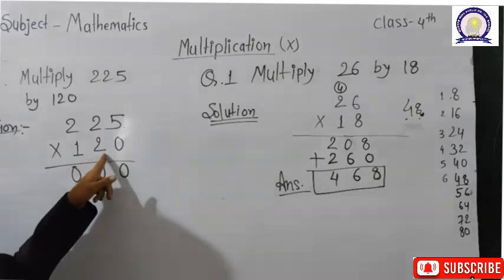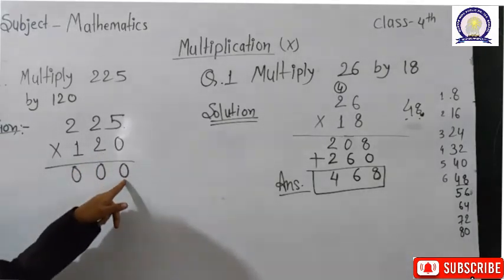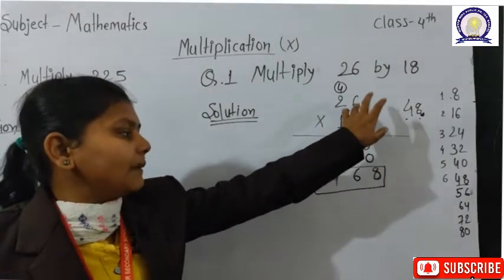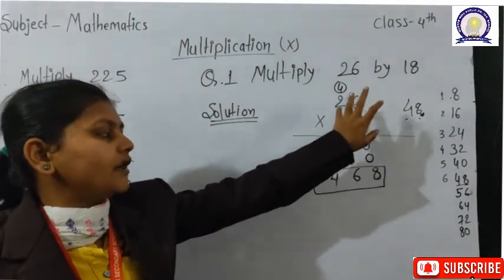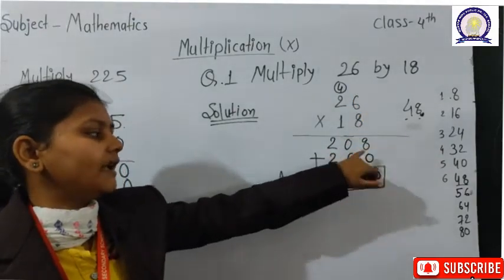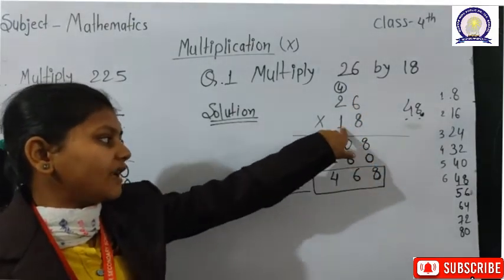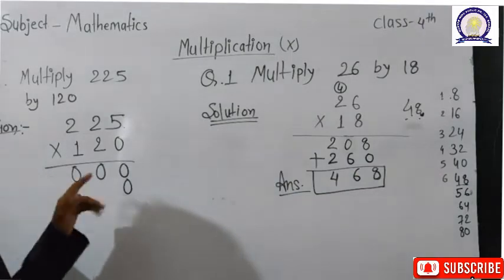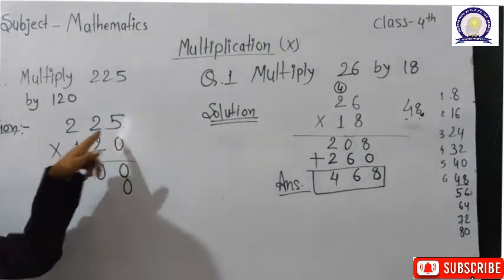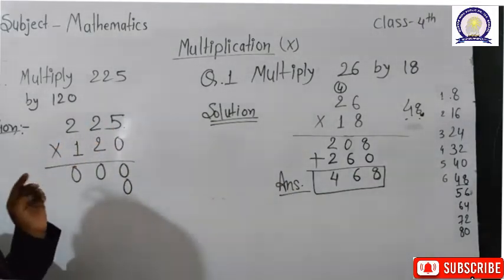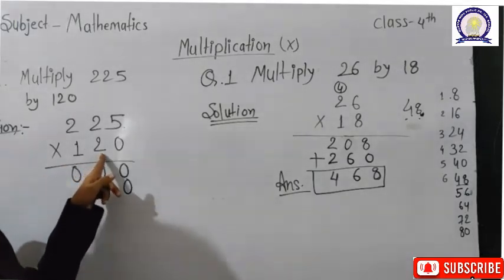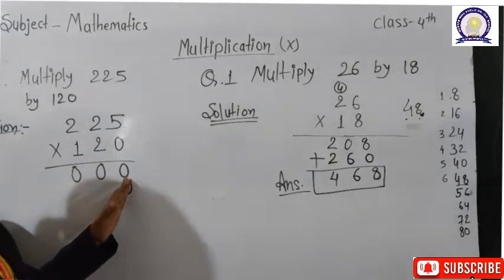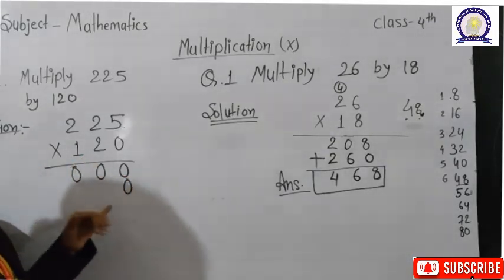We have to multiply 225 × 120. First we arrange the numbers: 5, 2, 2 on top and 0, 2, 1 below, with the multiplication symbol. We always start from the right side. We read the 0 times table for 5 — that gives 0. The 0 times table for 2 also gives 0. And 0 times table for 2 again gives 0.